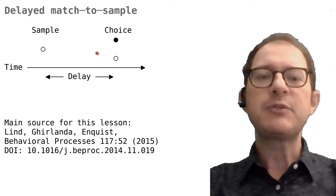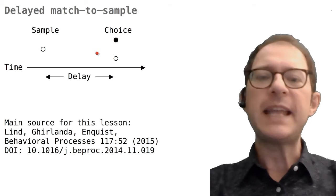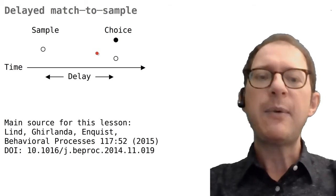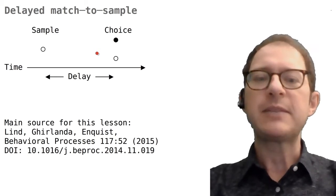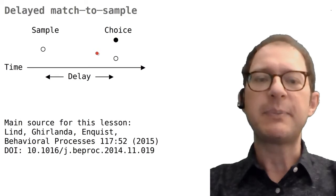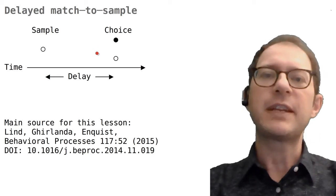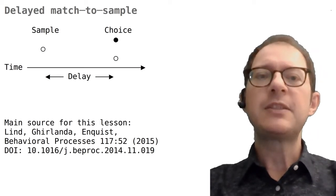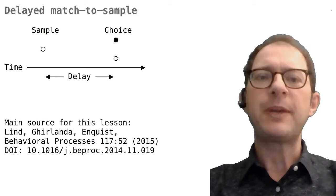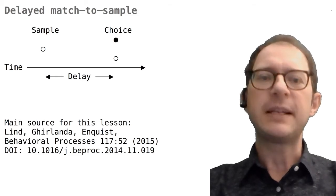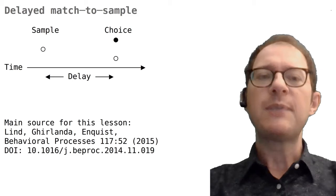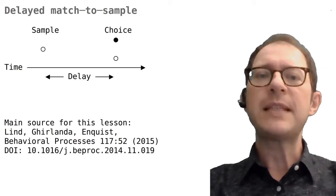In this example we have a black circle and a white circle as choice stimuli. The animal's task is to choose the choice stimulus that is identical to the sample. How an animal chooses in practice depends on the species and experimental setup. The way a DMTS experiment is used to measure short-term memory is by varying the delay interval. Making this interval longer means asking the animal to remember the sample for a longer time, which becomes more and more difficult.